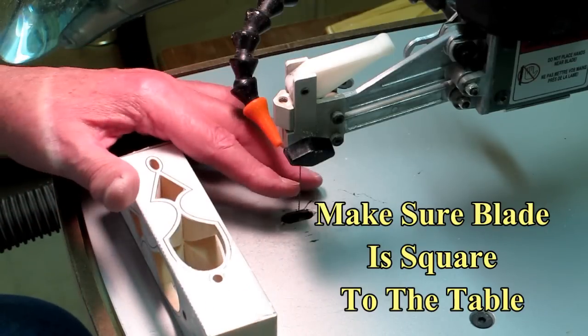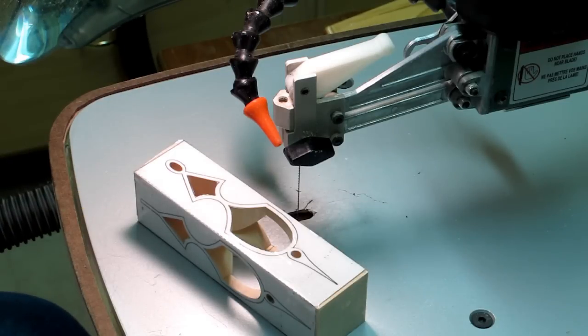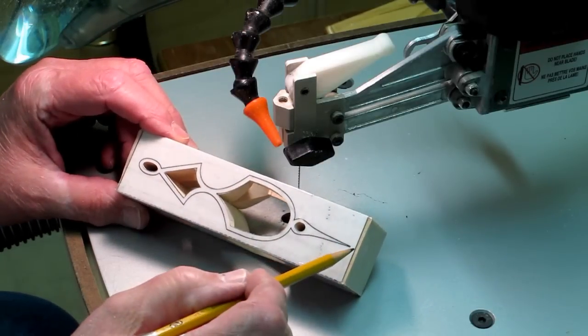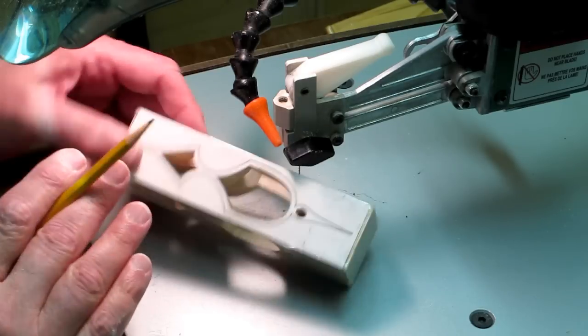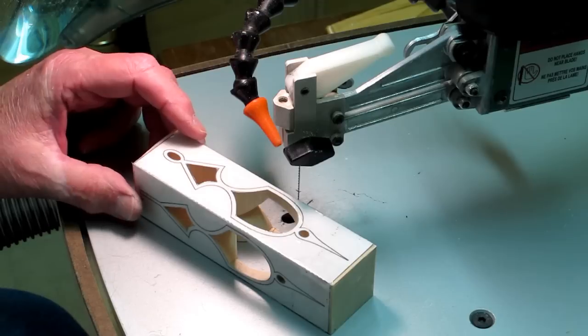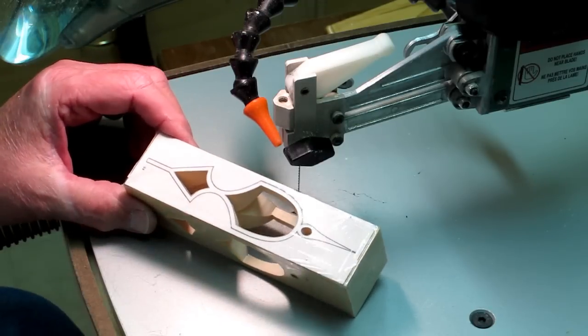When do you change a blade? When it quits cutting the way you think it should. I just put a new blade in this. I'm going to come in, I'm going to start here. I'm going to cut all the way around. I'll put a piece of tape on both sides, just like I did on the other ornament. And then I'll come in and I'll do the perimeter on this one.